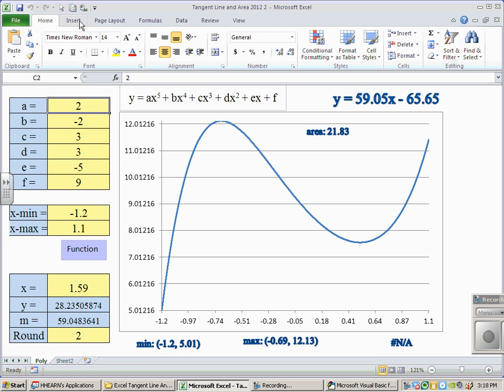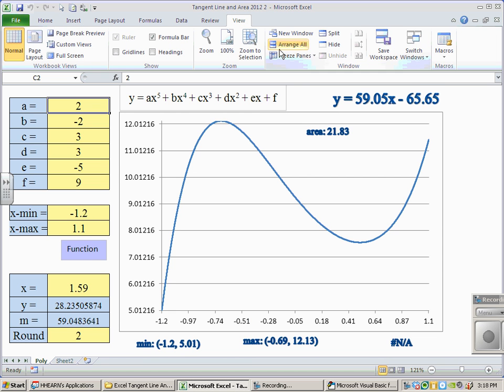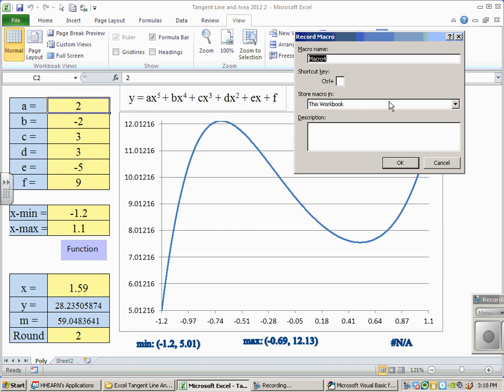Okay. But, I do need to be able to get back to where I can see the whole thing. So, I'm going to record one more macro. I'm going to go to view. Macros. Record a new macro. I'm going to call this one both, as in both functions. I'm going to click OK.